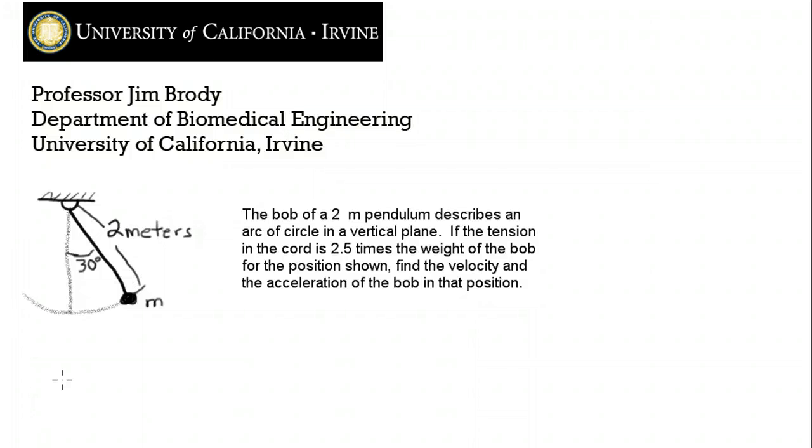So we approach this problem the same way we approach all problems. We're going to write that the sum of the forces in vector form is equal to the mass times the acceleration. Now in this particular case, the forces, there's only two. There's the weight due to gravity, and I'll write this as a vector, plus the tension in the string.